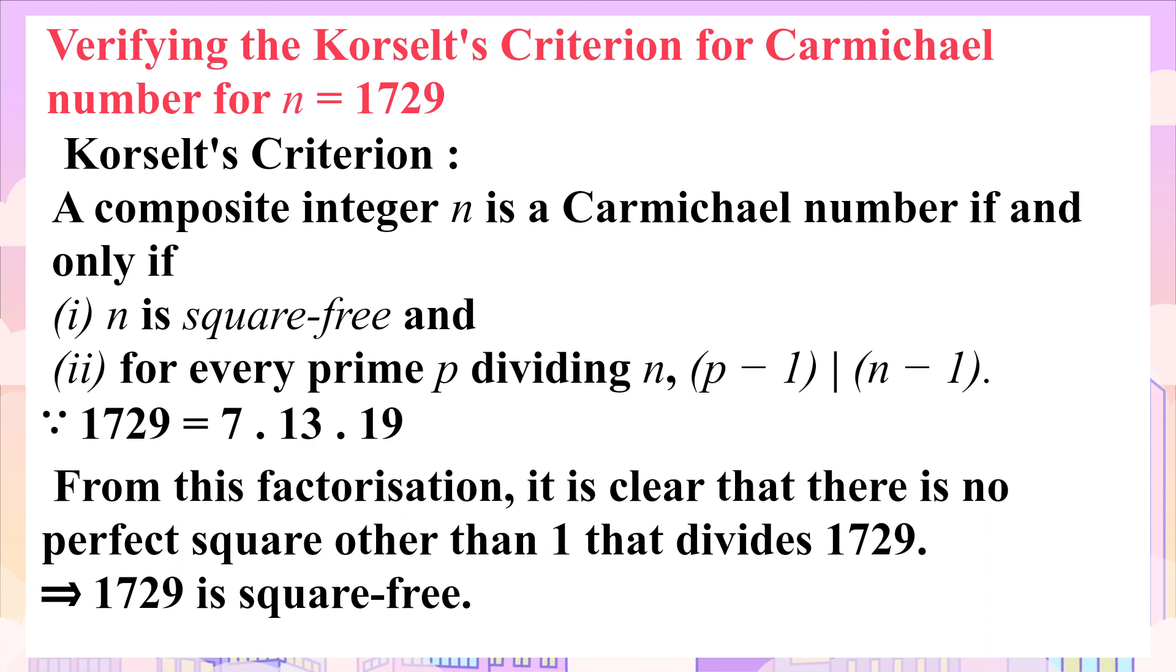From the factorization of 1729, we observed that none of the prime factors occur with an exponent greater than 1, which means that other than 1, there is no perfect square that divides this number. Thus, 1729 is square free.